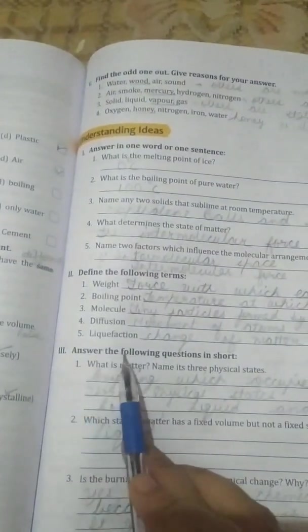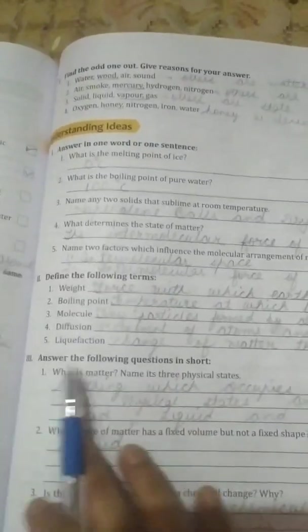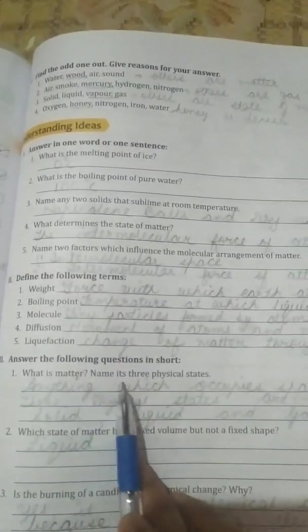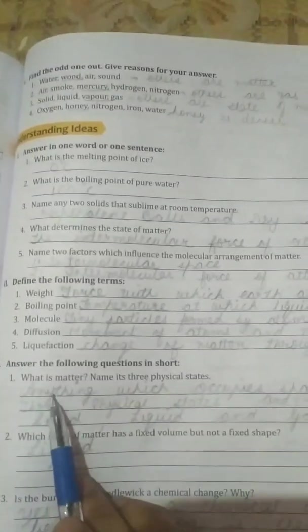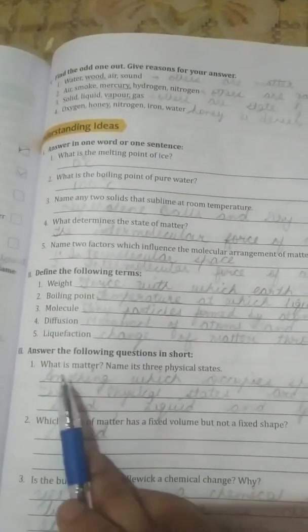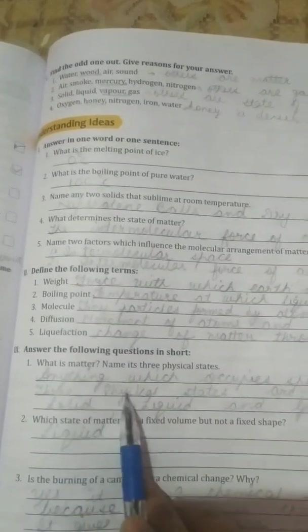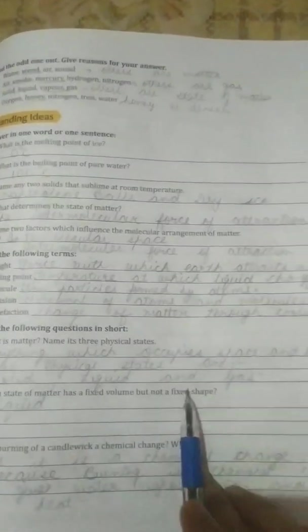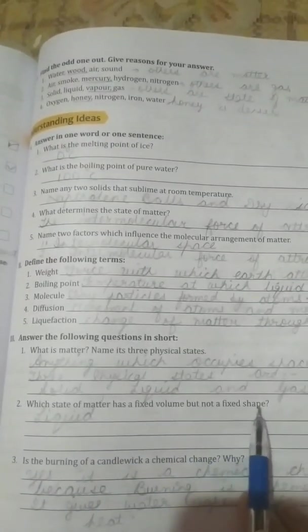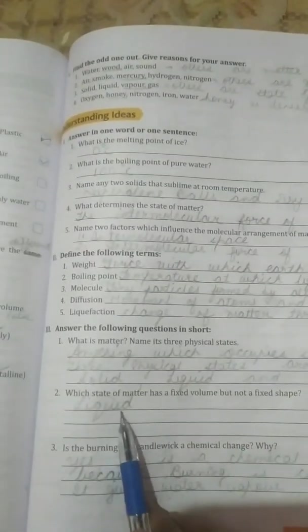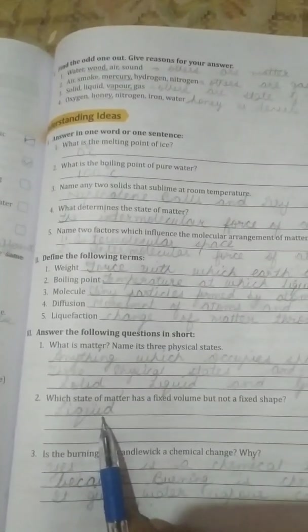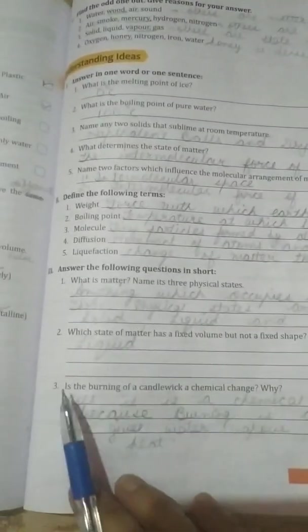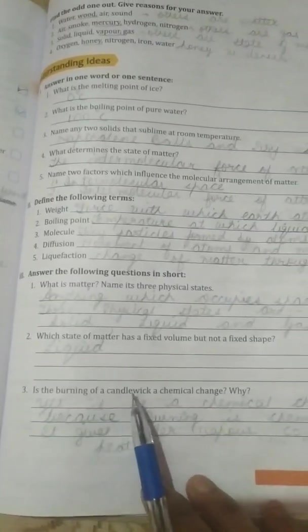Second, answer the following questions in short. So this question you have to write in short only. What is matter? Name its three physical states. Anything which occupies space and has mass is known as matter. Three physical states are solid, liquid, and gas. Second, which state of matter has a fixed volume but not a fixed shape? That is liquid, because liquid takes the shape of the container in which it is poured or kept. Third, is the burning of a candle a chemical change? Why? Yes, it is a chemical change because burning is a chemical change.